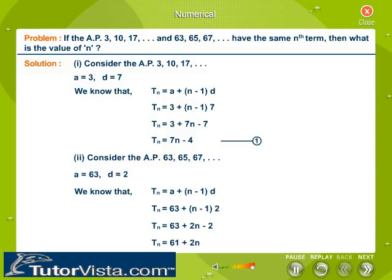Therefore, Tn is equal to 61 plus 2n. Let this be equation 2.